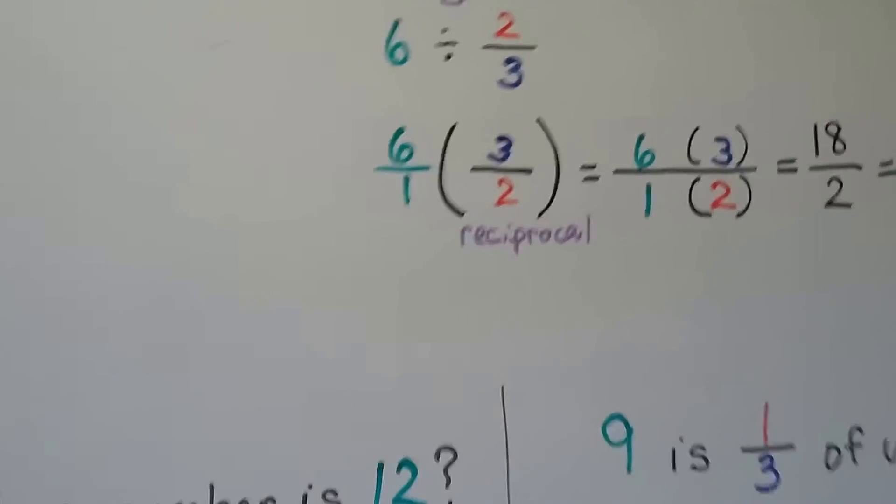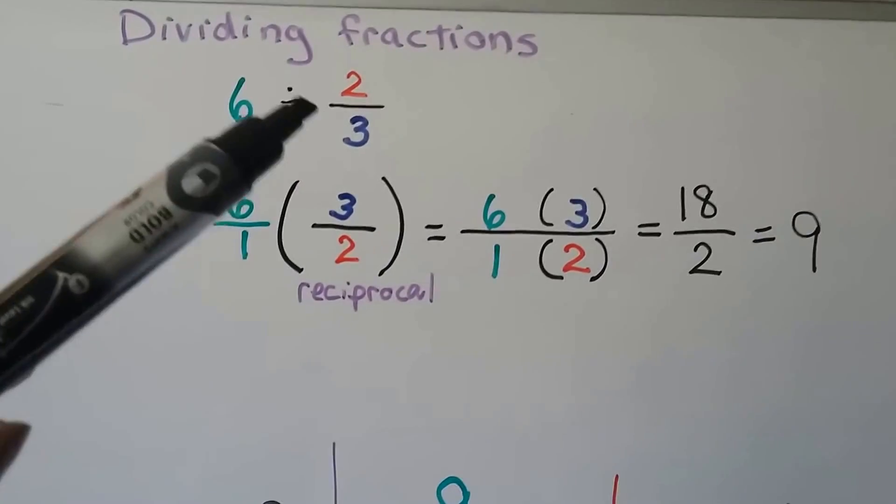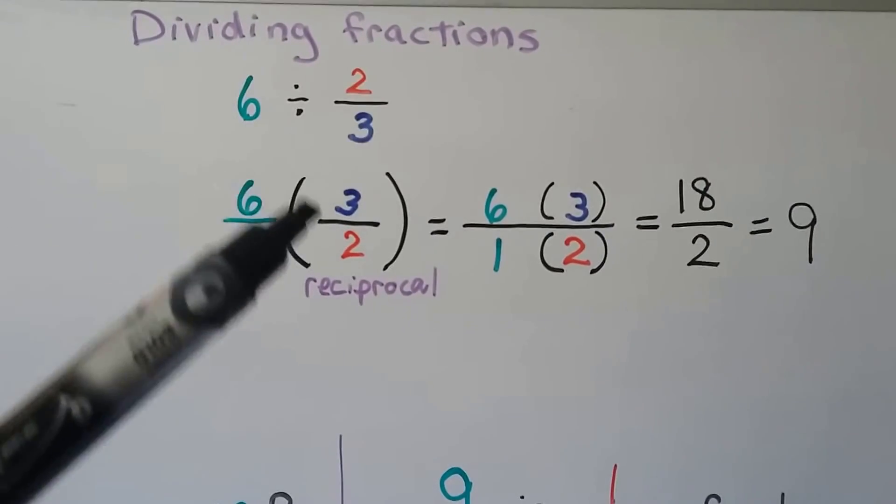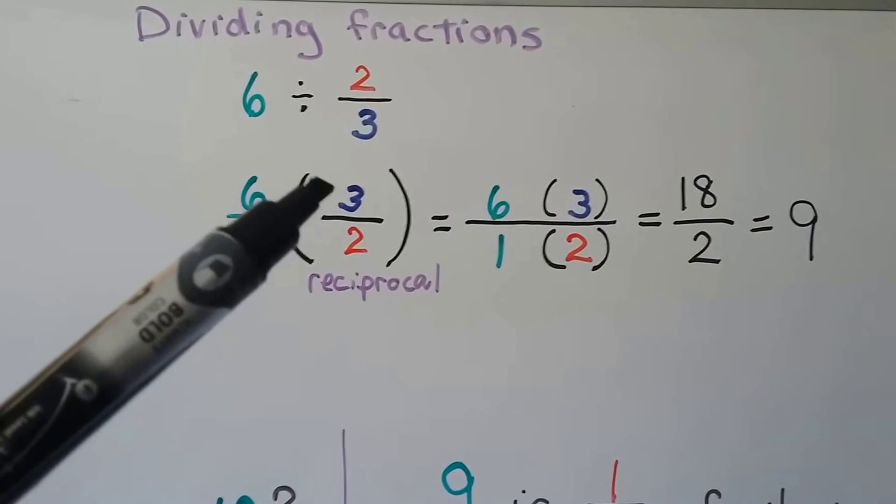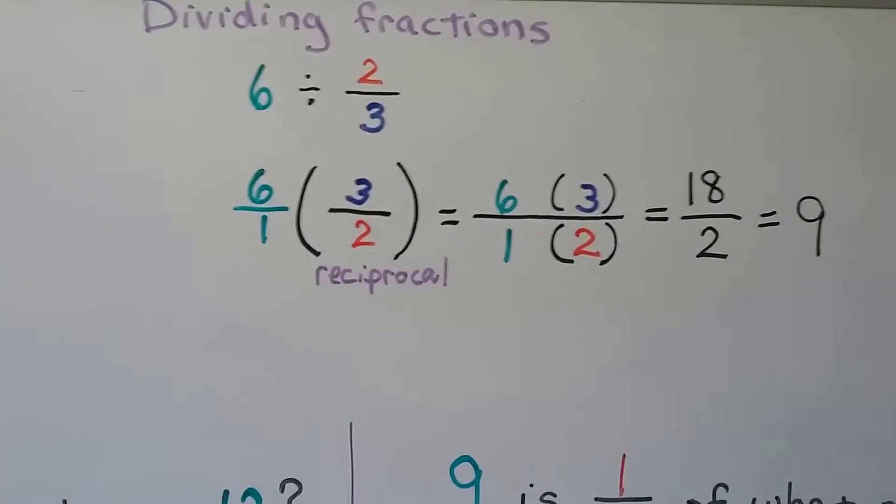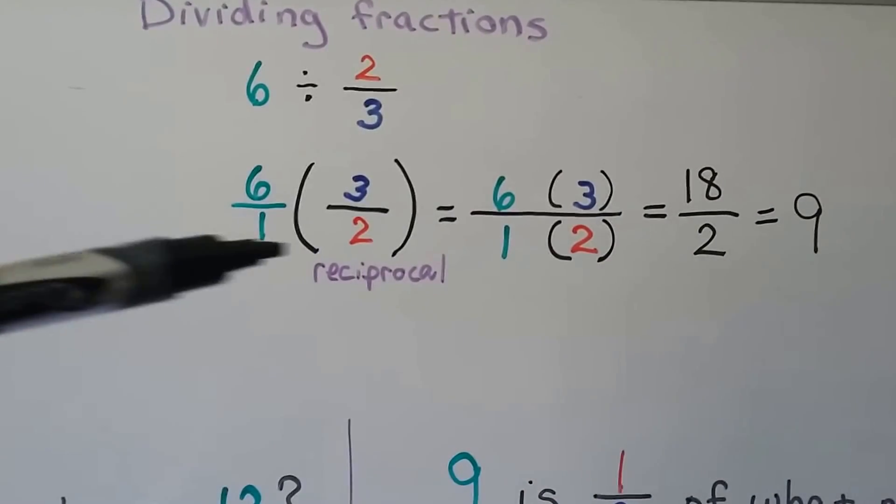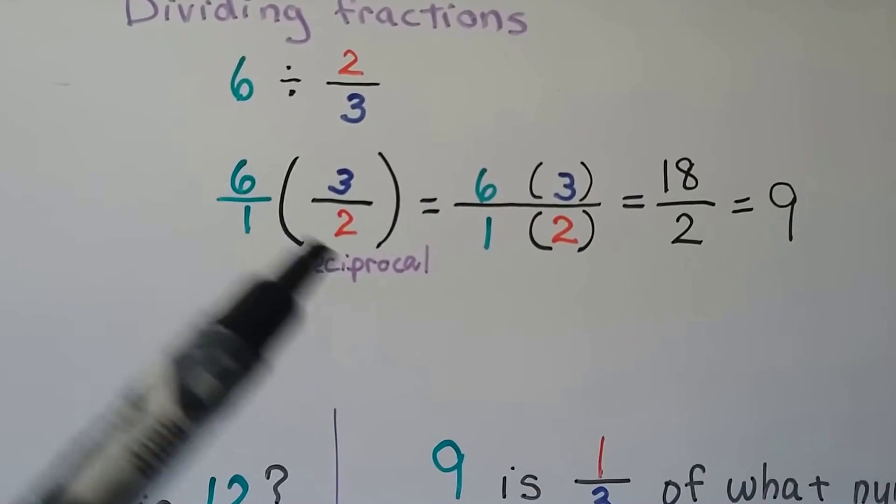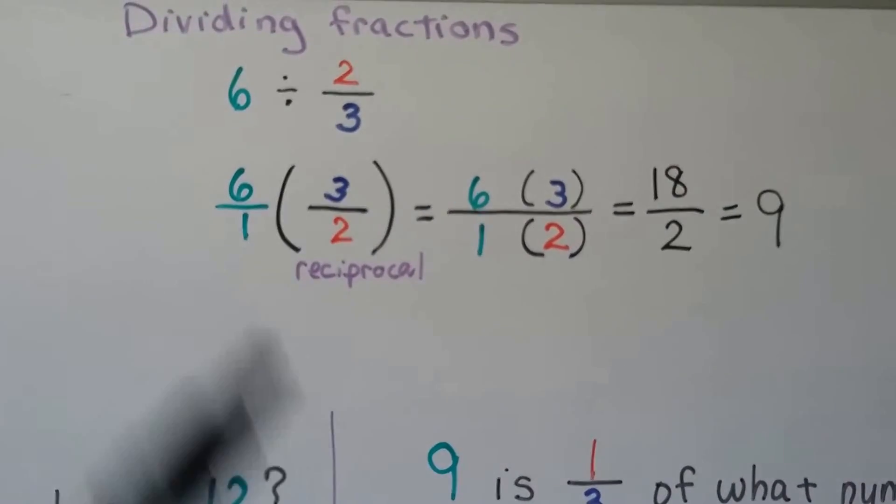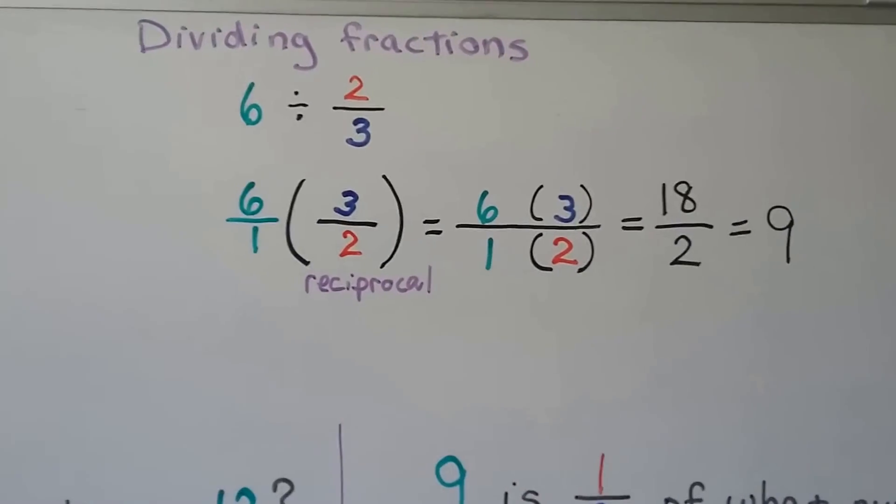For dividing fractions, we flip the fraction around as the reciprocal, where the denominator is on the top and the numerator is on the bottom, and then we just multiply straight across. We can also simplify this with the greatest common factor in cross-canceling, but hang on for now.